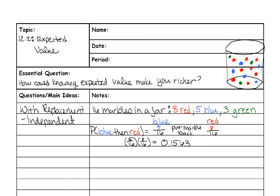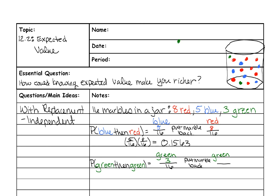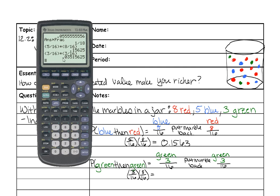The next example is the probability of choosing a green and then another green. I take a green marble out of the jar — there are three greens out of 16 total — record it and put it back in. Then I choose another green: again three out of 16. Multiplying those two fractions together, the probability is 0.0352.